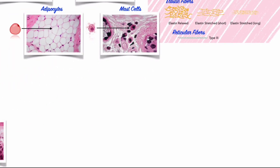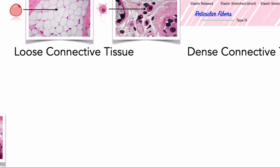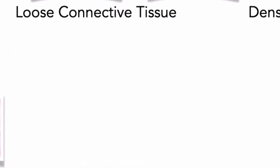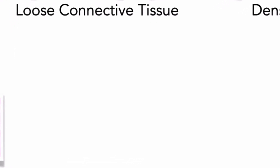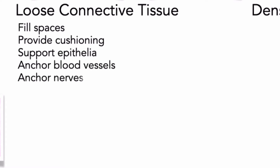Connective tissue proper is divided into two categories: loose connective tissue and dense connective tissue. The distinction is based on the relative proportion of cells, fibers, and ground substance. Loose connective tissues are the packing materials of the body. They fill spaces between organs, provide cushioning, and support epithelia. They also anchor blood vessels and nerves, store lipids, and provide a route for the diffusion of materials.